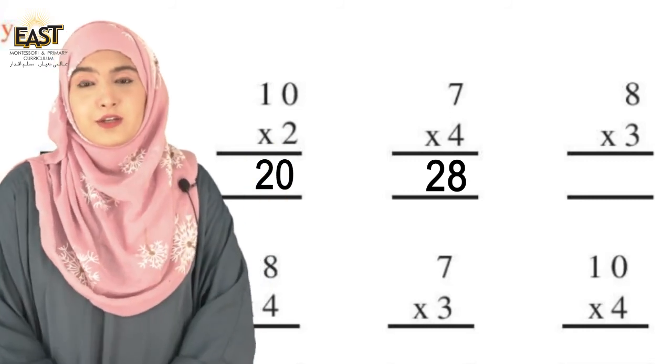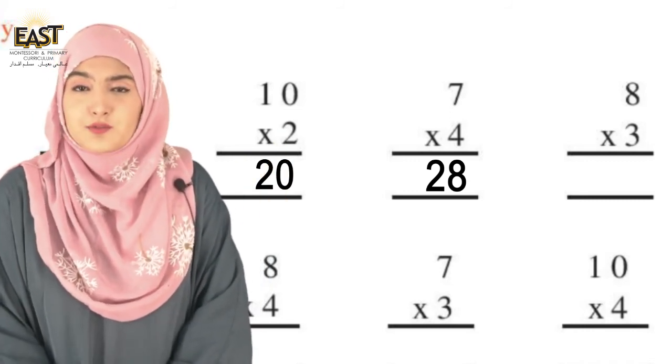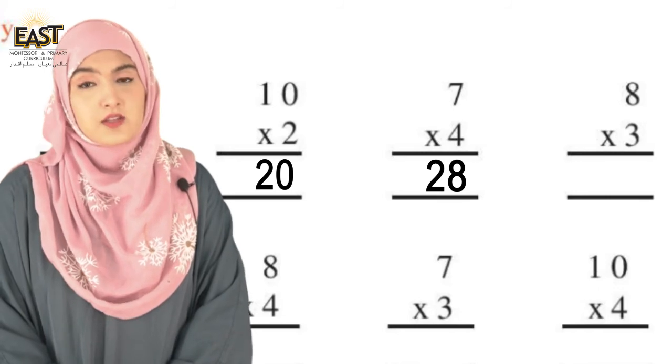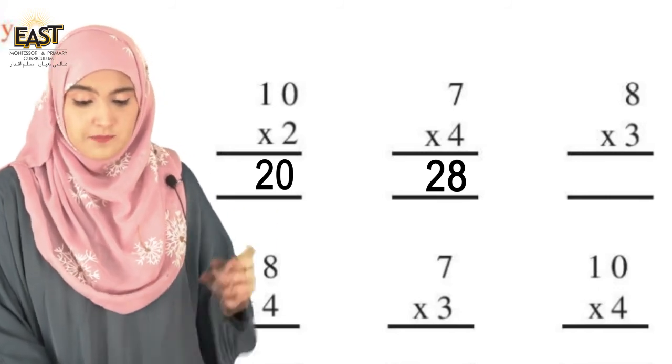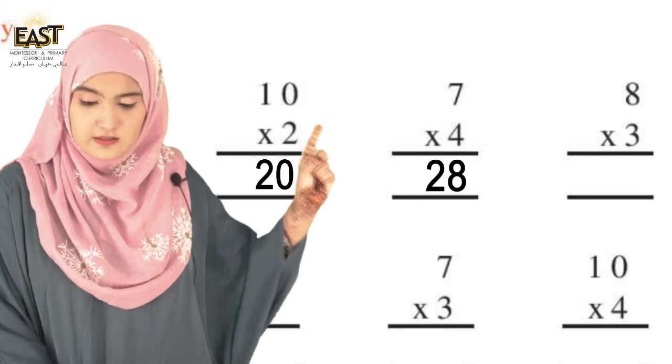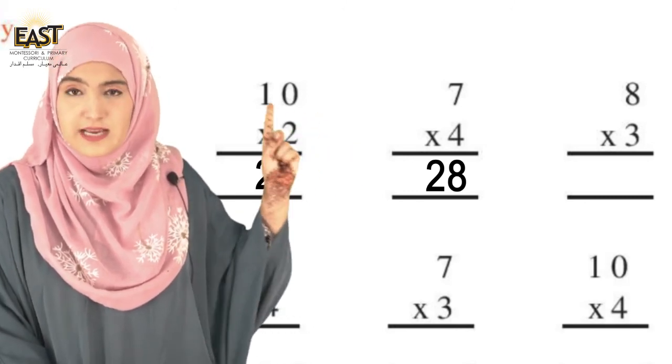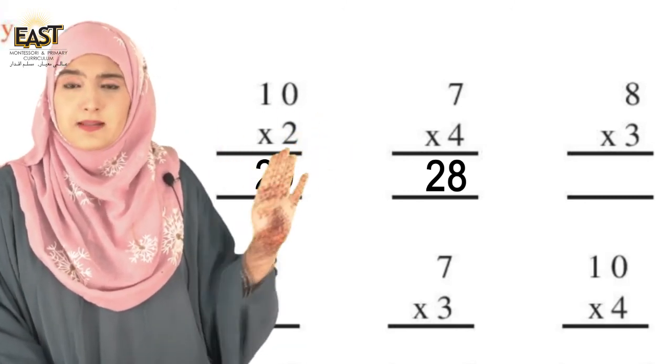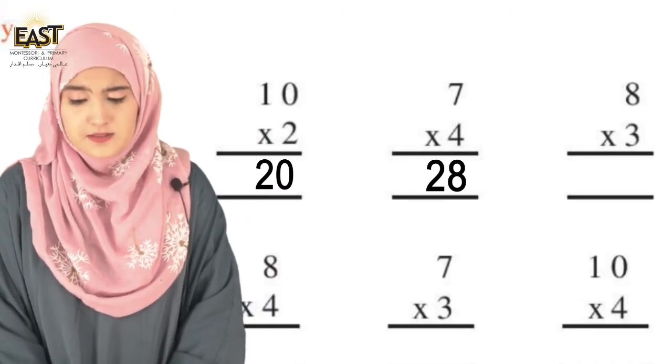Now what you have to do is solve the rest of the sums: eight times three, two times nine, three times ten, four times eight, three times seven, four times ten. Multiply these six remaining sums.